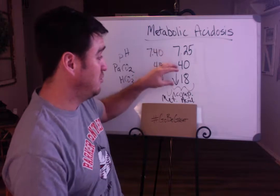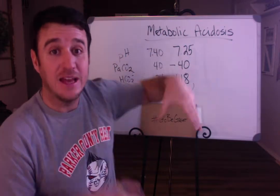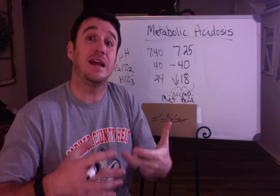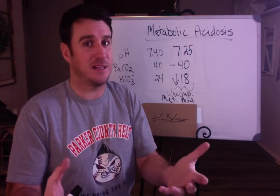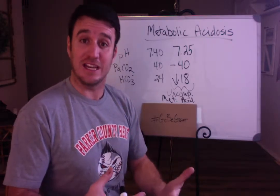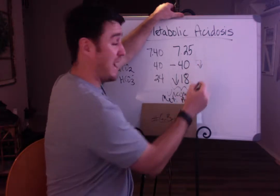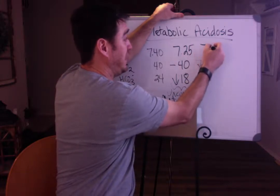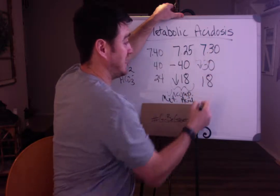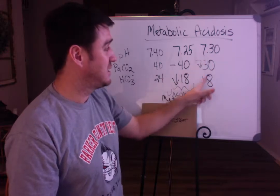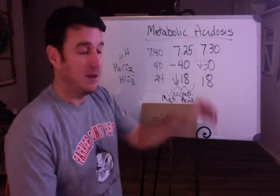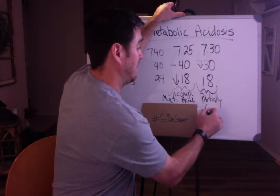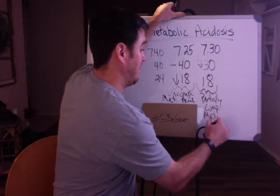As the respiratory system kicks in and says 'we've got to get rid of some of this acid to bring the pH back up,' the respiratory system will blow CO2 down. So as your CO2 goes down to 30 and your pH comes up to 7.30, your bicarb stays at 18. Now you call this a partially compensated metabolic acidosis.